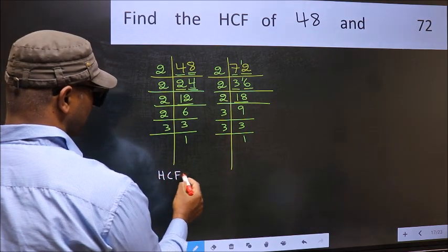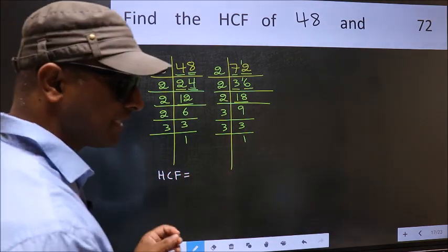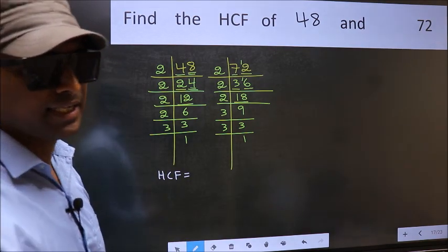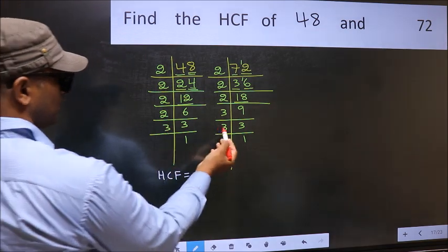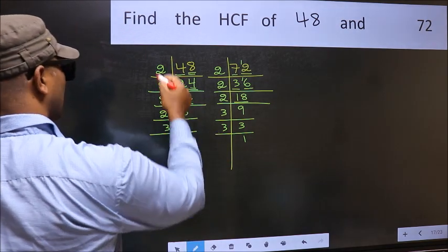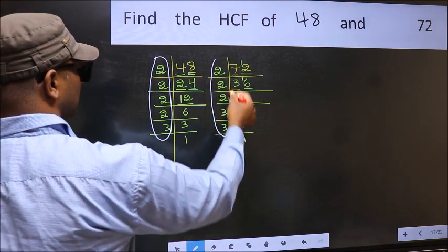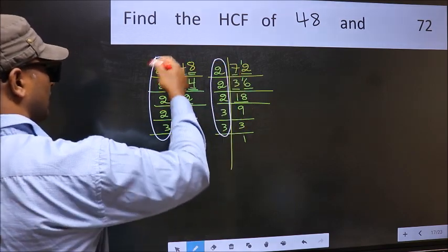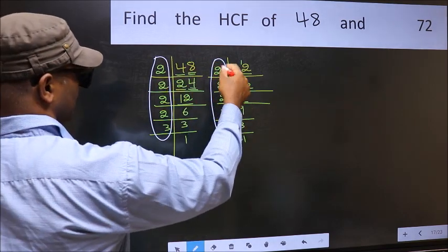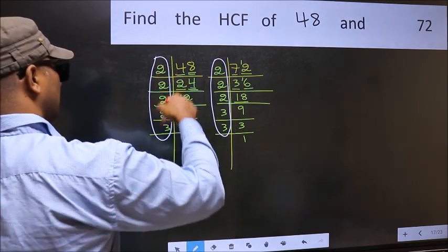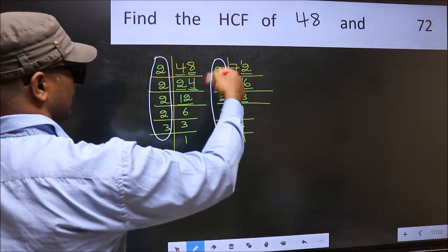Therefore, our HCF is the product of the numbers which should be present in these two places, that is here and also here, here and here. So now let us find the numbers which should be present here and here.